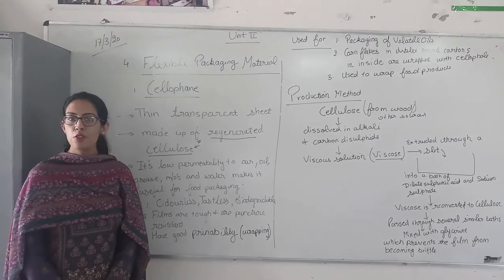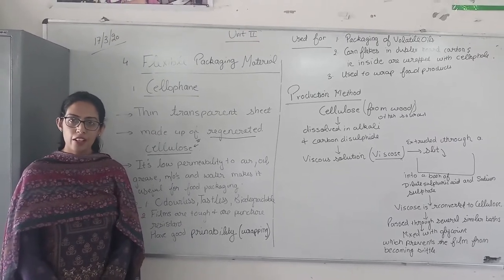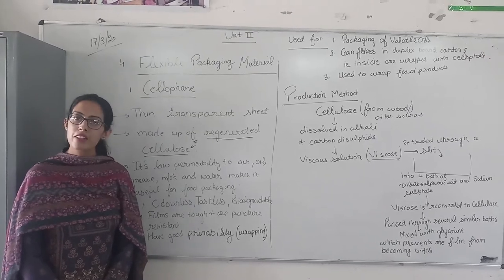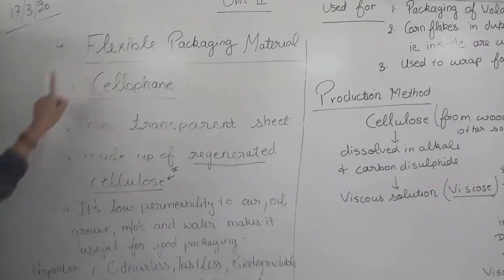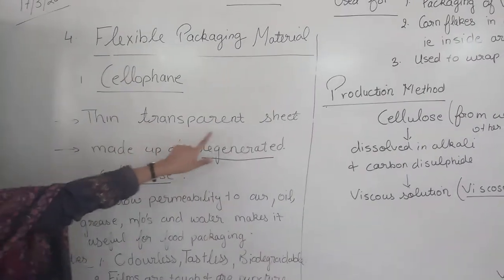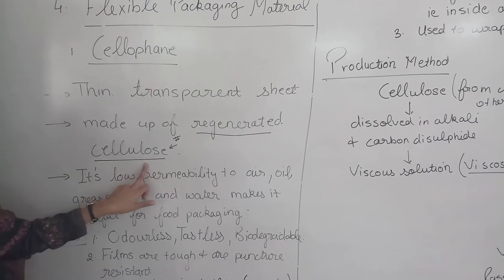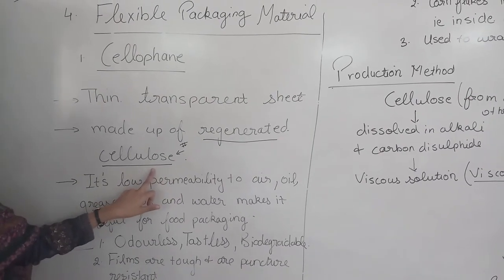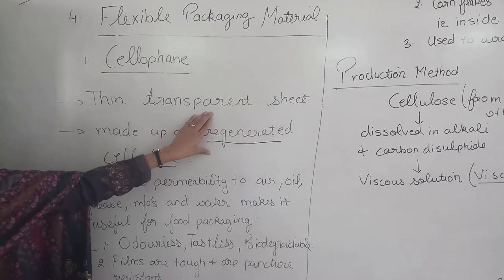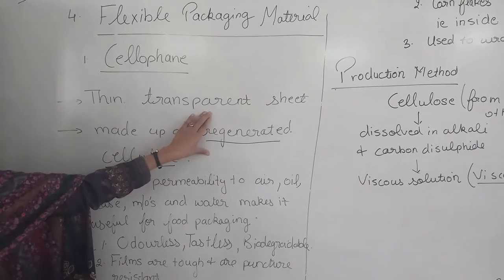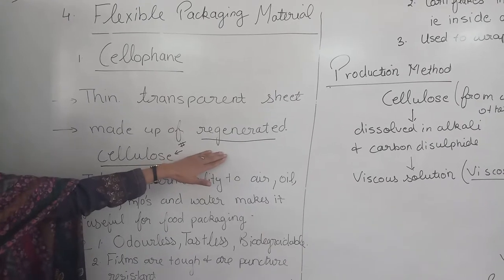A very good afternoon students. Today we are going to cover the topic cellophane. Cellophane is a flexible packaging material. It is a thin transparent sheet which is prepared from regenerated cellulose. Regenerated cellulose means that cellulose which we have regenerated. Later on I am going to tell you about its production method so that this term gets much more clearer.